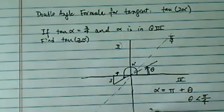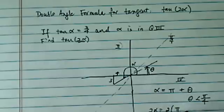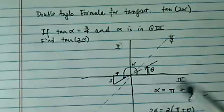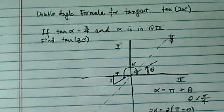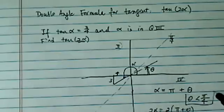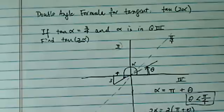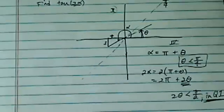This is important because 2 alpha is equal to twice of pi plus theta. The 2 pi part we don't really care about — it just goes around a circle. But the 2 theta part is important: since theta is less than pi over 4, 2 theta is less than pi over 2, so it's in quadrant 1. That means 2 alpha is going to be a positive thing.